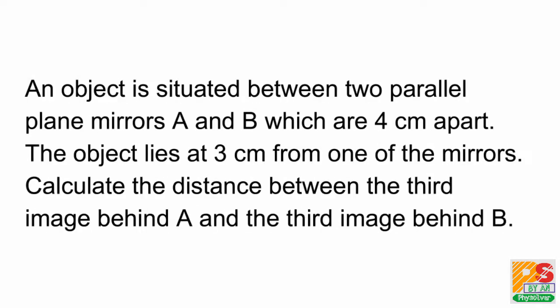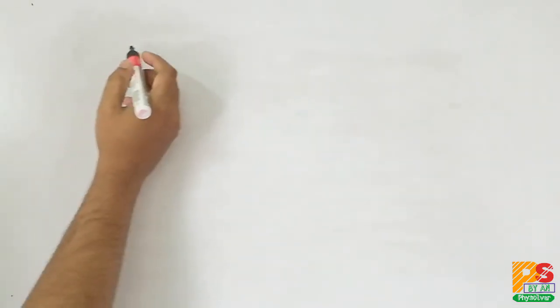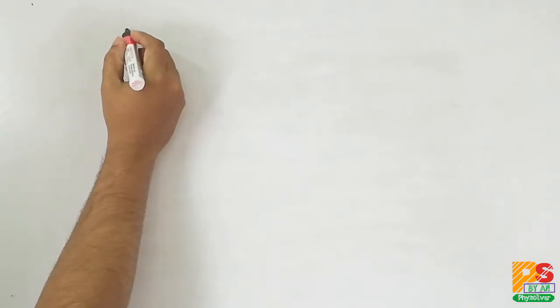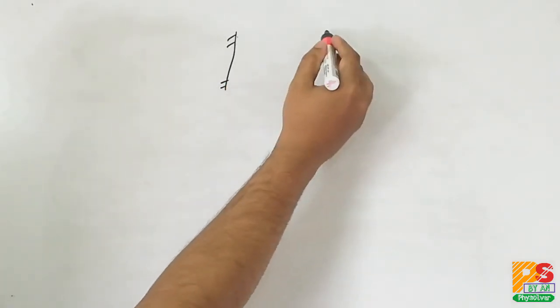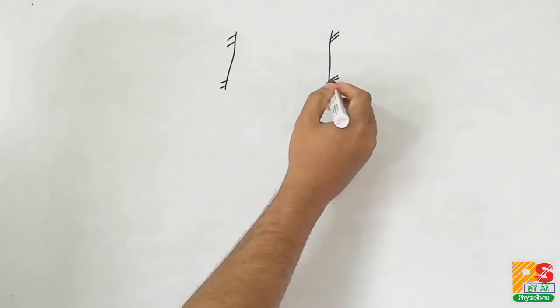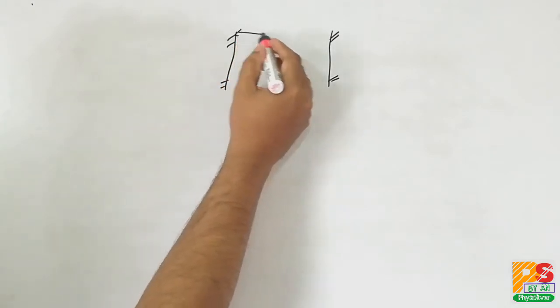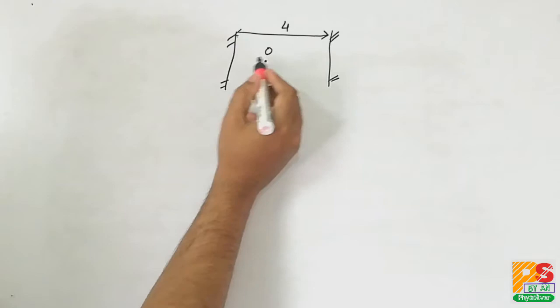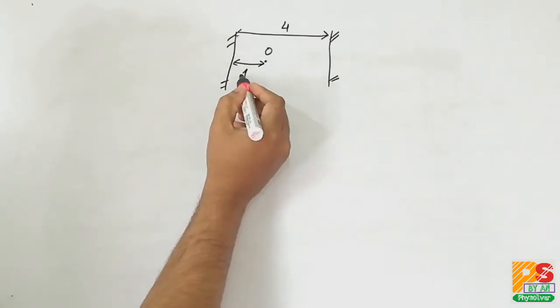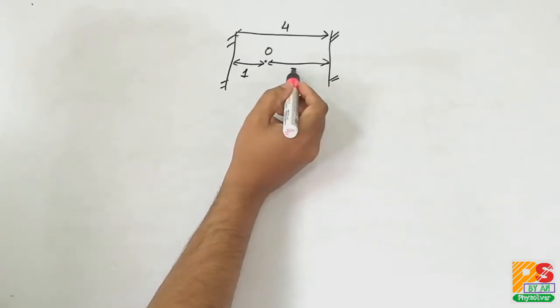An object is situated between two parallel plane mirrors A and B which are 4 cm apart. The object lies at 1 cm from one of the mirrors and 3 cm from the other mirror. Calculate the distance between the third image behind A and behind B.